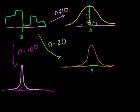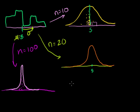So two things happen as you increase your sample size for every time you do the average: you're becoming more normal, and your standard deviation is getting smaller. So the question might arise — is there a formula? If I know the standard deviation of my original probability density function, and I know n — which is going to change depending on how many samples I'm taking each time — can I figure something out?